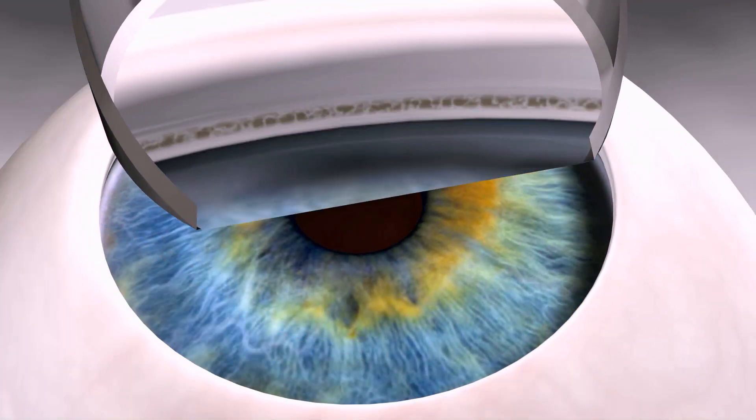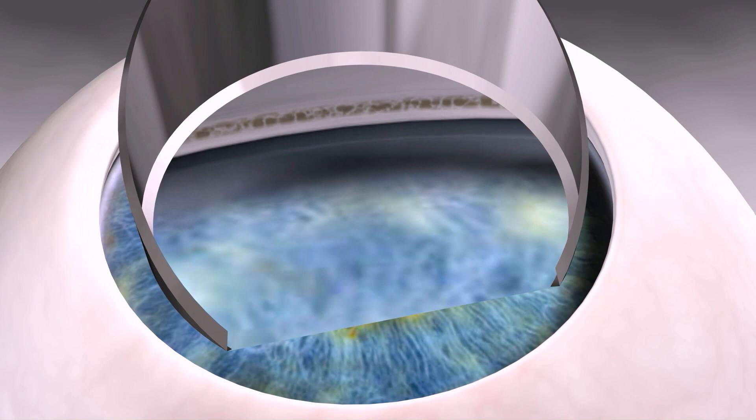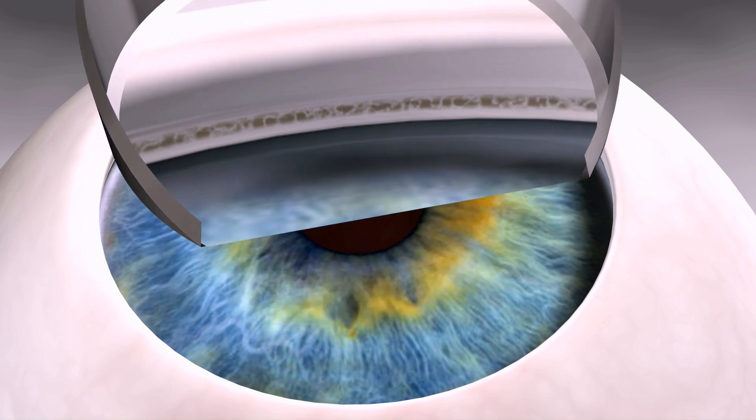After prepping the patient, gonioscopy is used to confirm adequacy of the angle for device implantation prior to insertion of the Cypass Microstent.